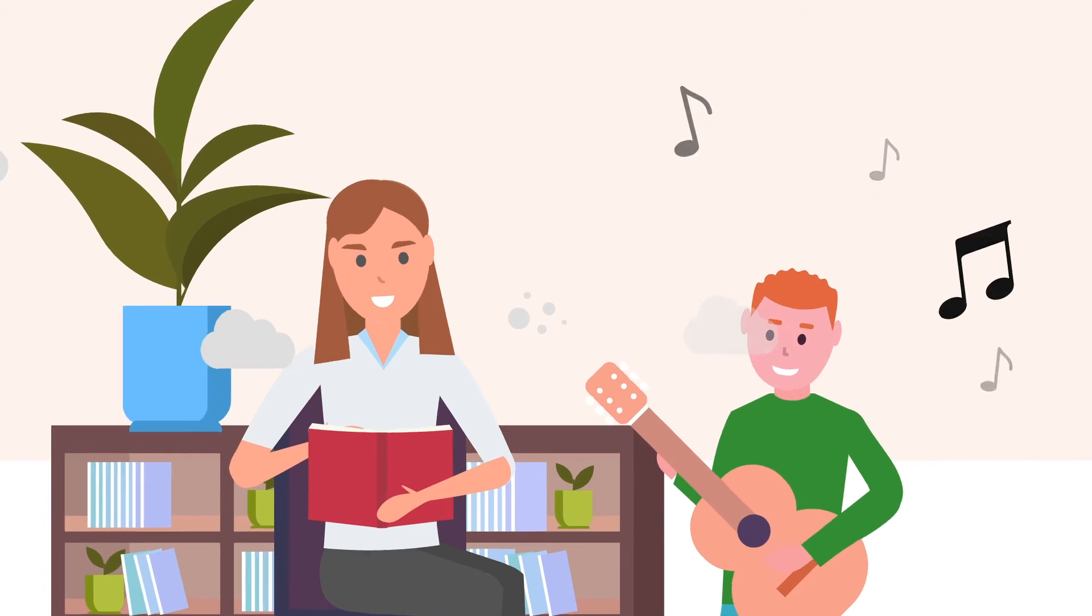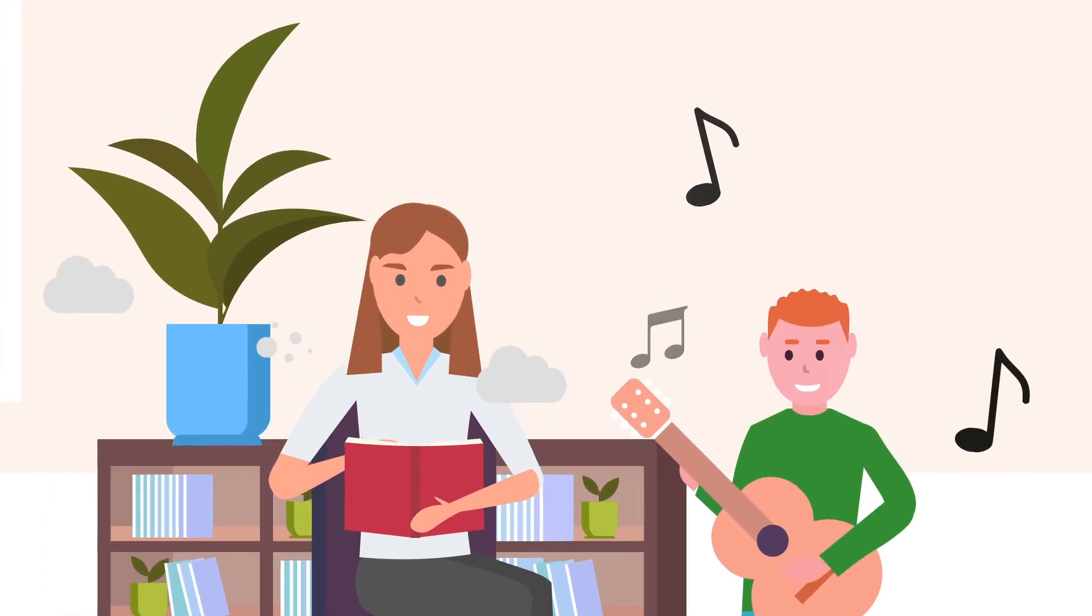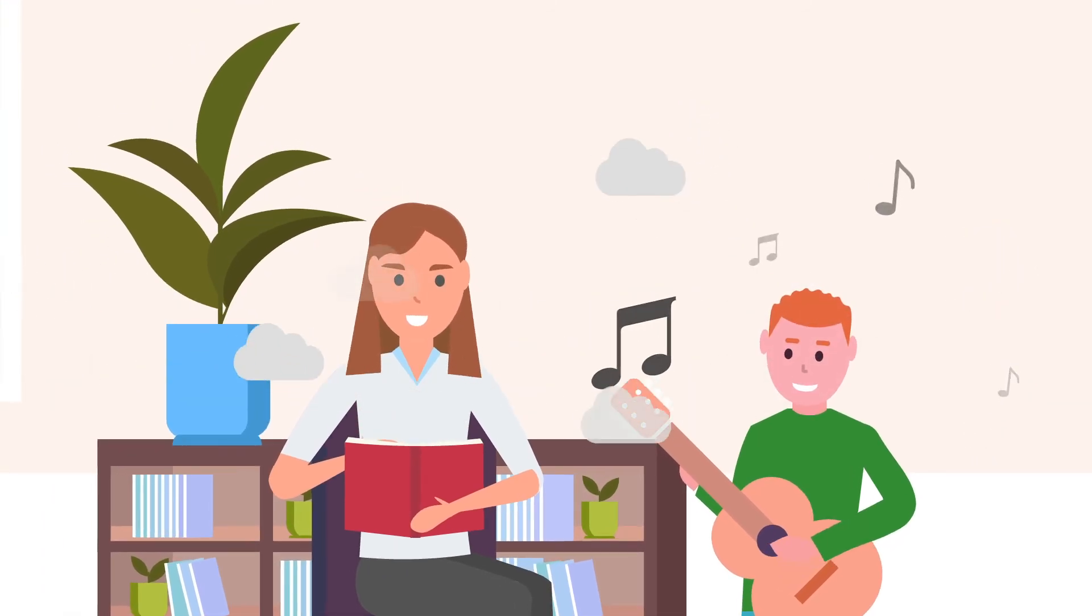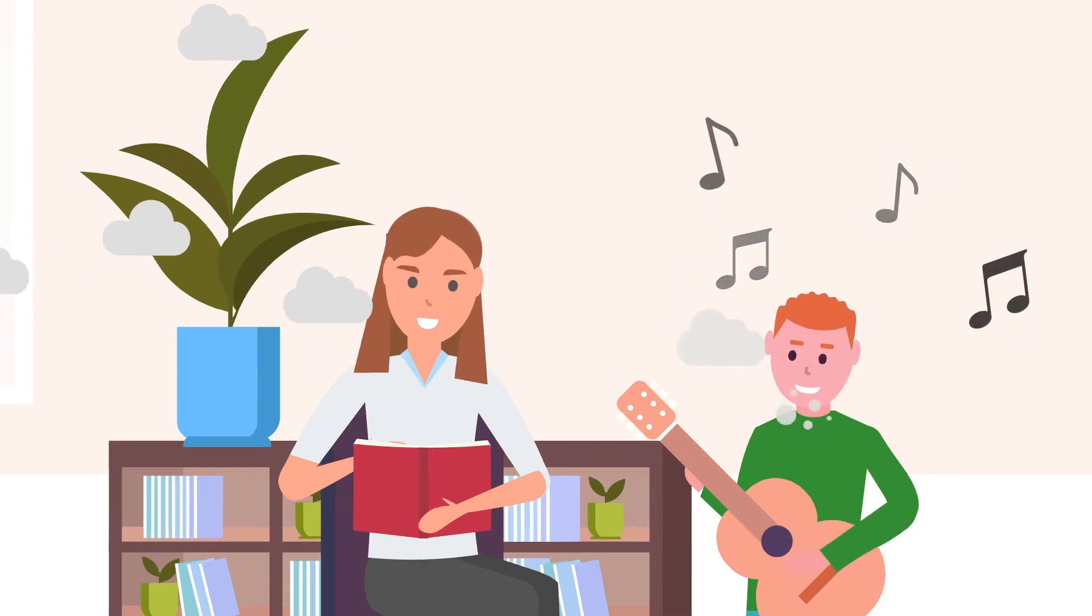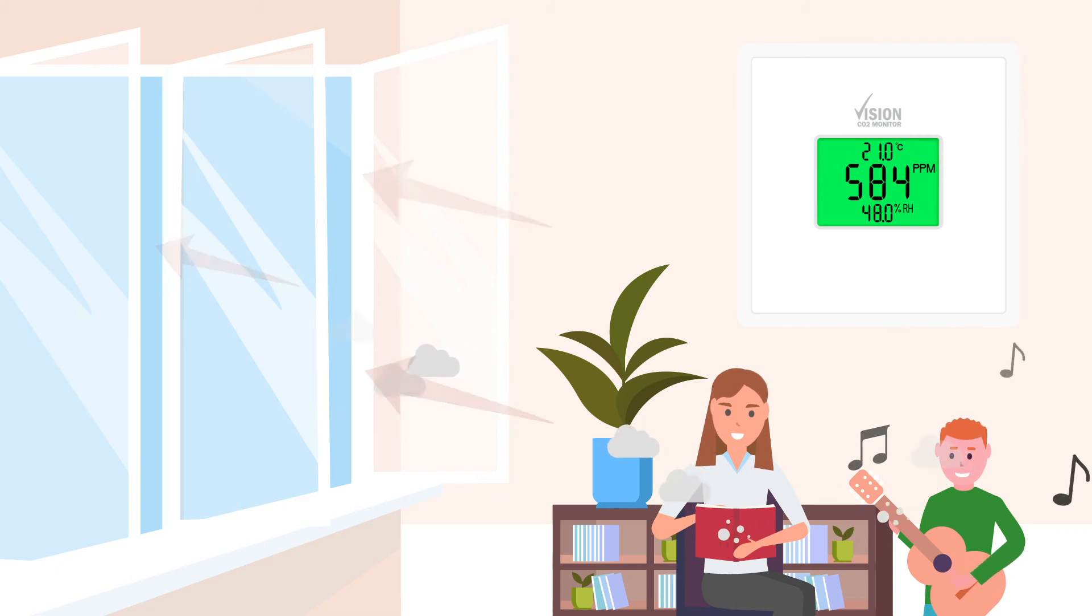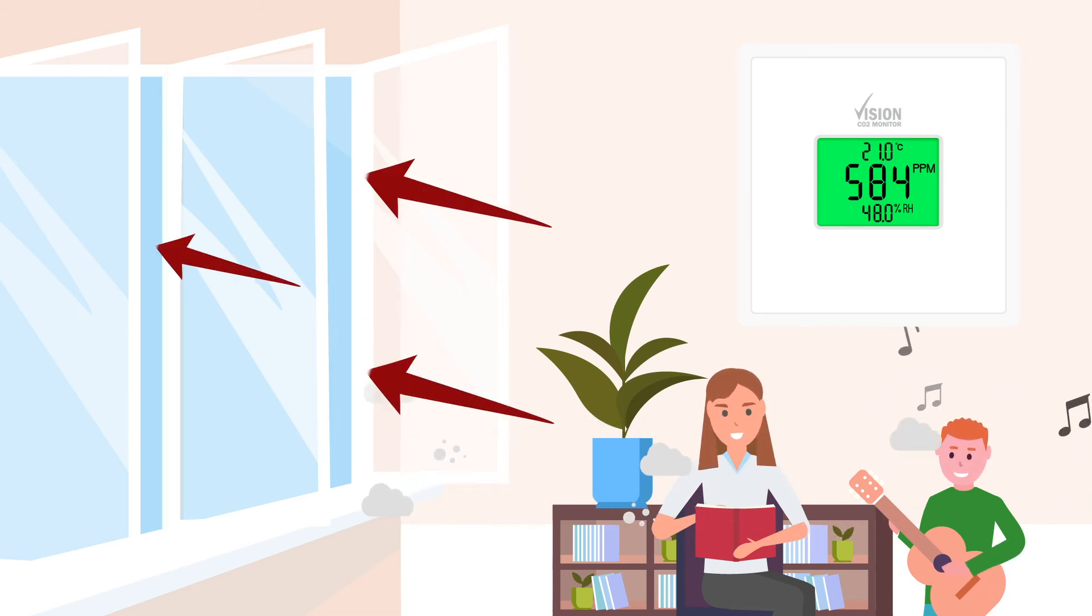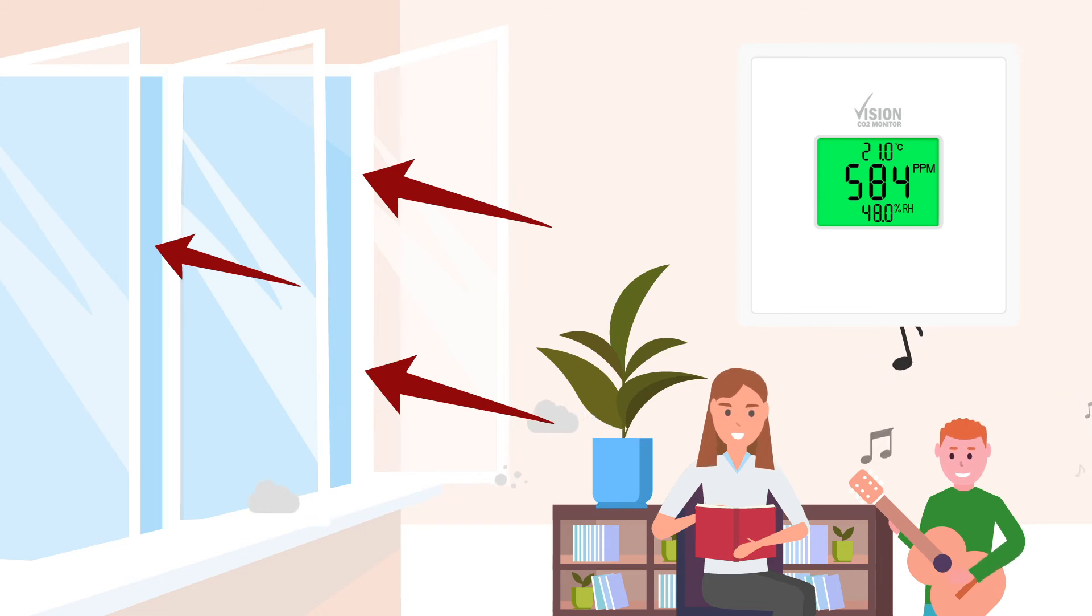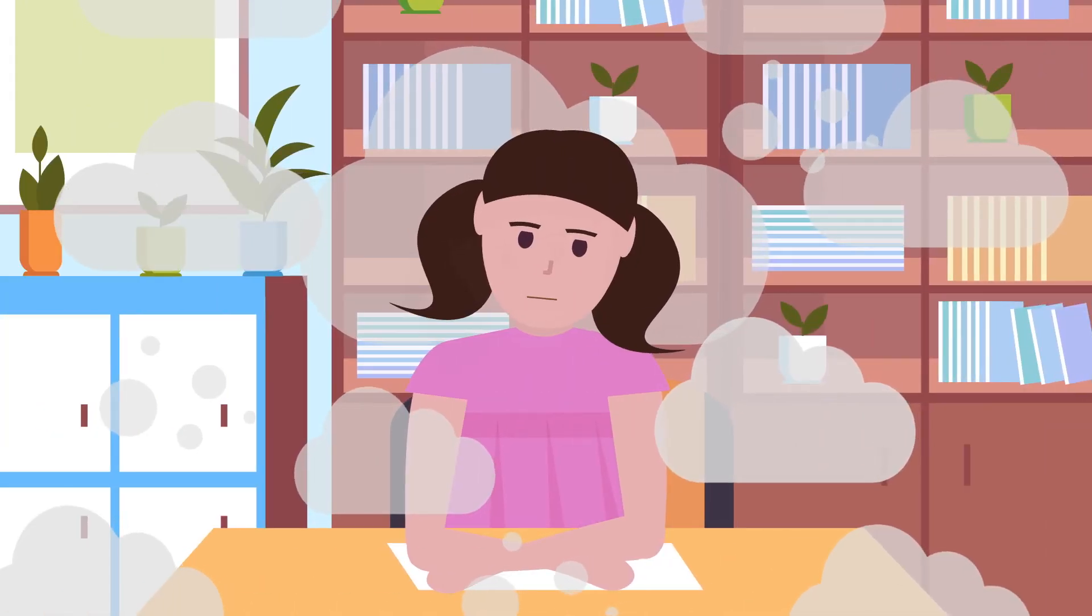Activities such as shouting, singing, or exercise can not only increase the amount of CO2 that we produce but also affect how it travels, as our breath is being projected. This means that CO2 and other particles can travel further. In these circumstances, more ventilation than usual may be required as a lower CO2 level should be maintained.